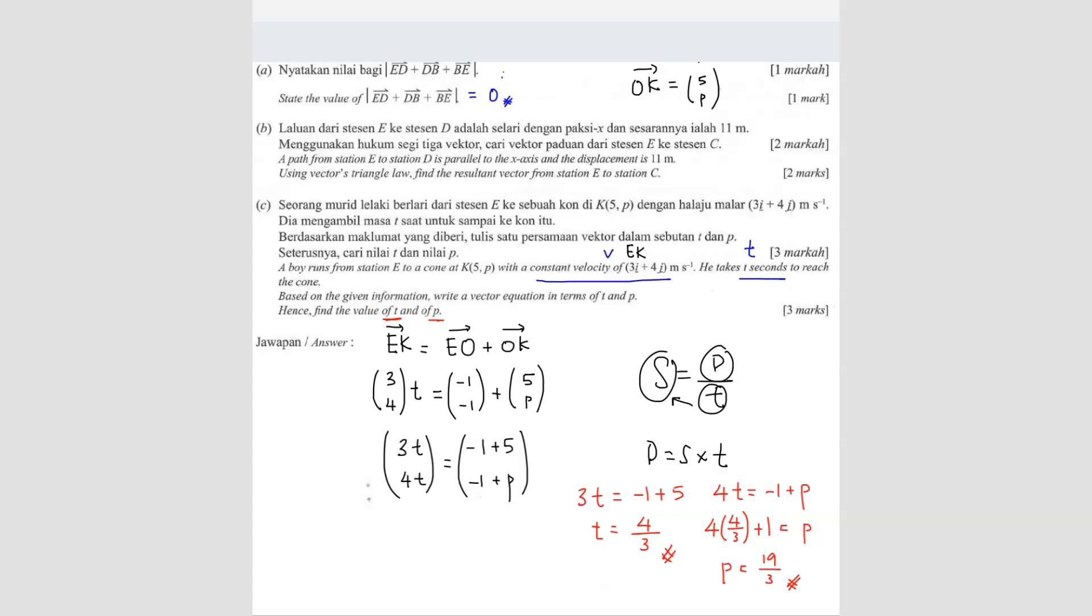So there you have it. So this is how you solve this kind of question. The main thing is you have to take note, the V and the T, you have to multiply to find the displacement. So that's what I did here, EK. You multiply the velocity and the time. So once you have found the vector of EK, then you just form your equation. So this one is EO plus OK. This is the easiest way to form an equation. I always go to the origin. Then you just plot in the values. Then you just do like normal. So this is how you do it.